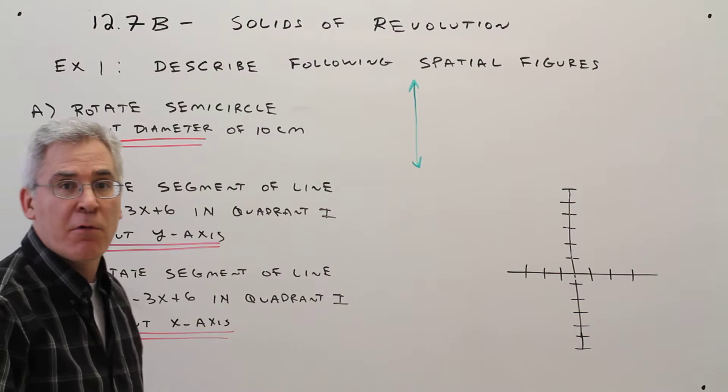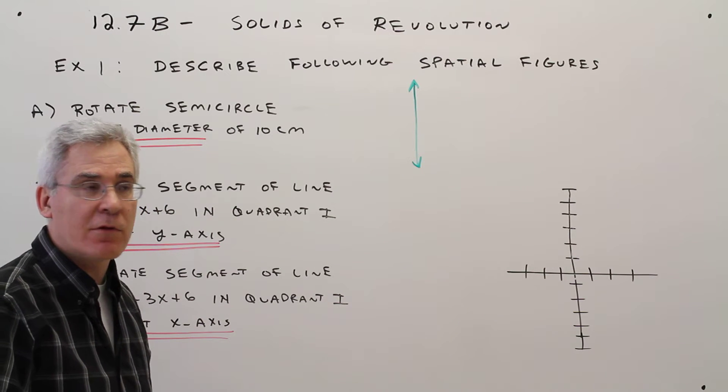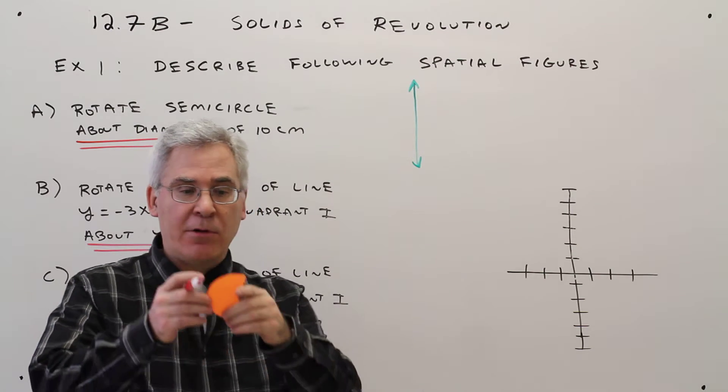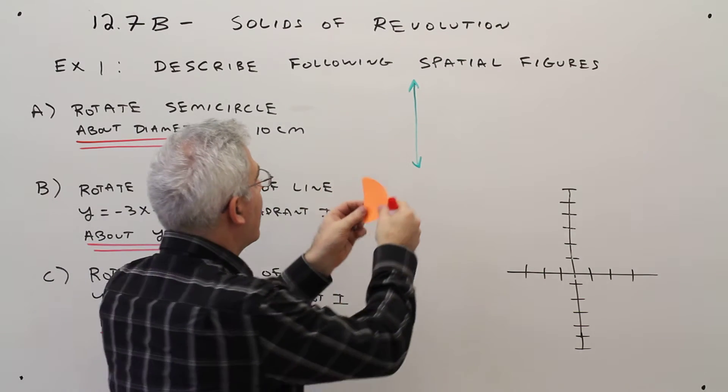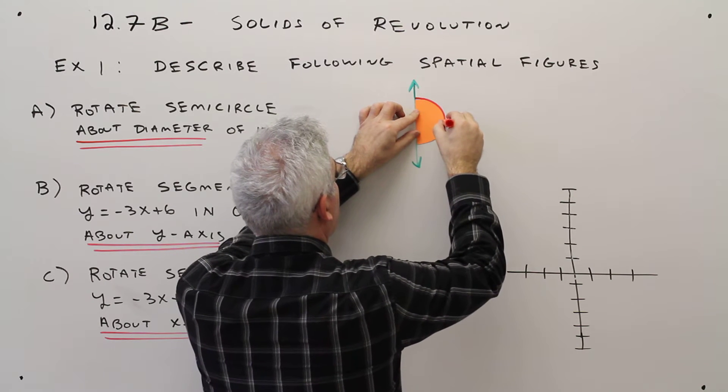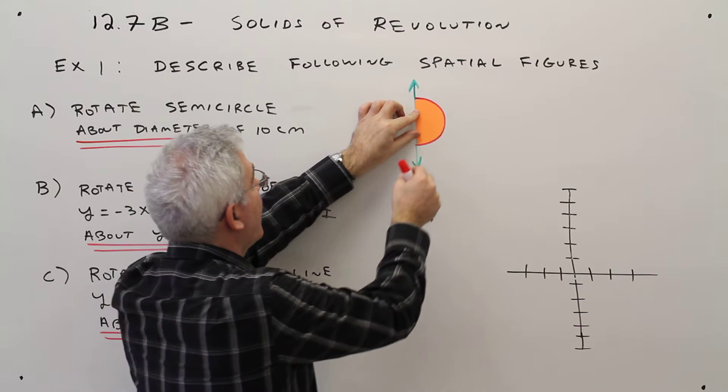Part A, rotate a semicircle about its diameter of 10 centimeters. So here is a line that we'll rotate about. Here is a semicircle. So let's just say we've got a semicircle. And it's got a diameter of 10 centimeters.